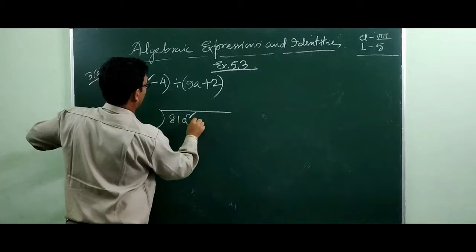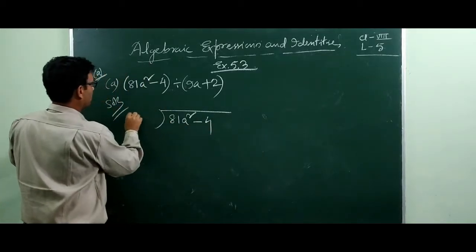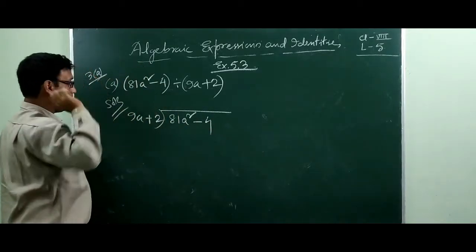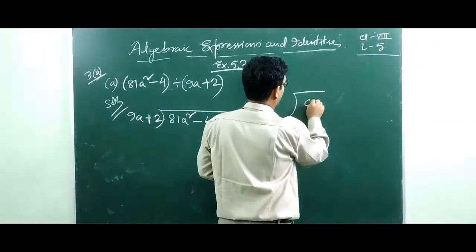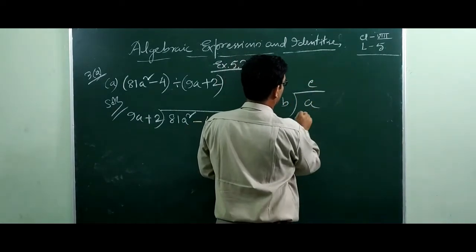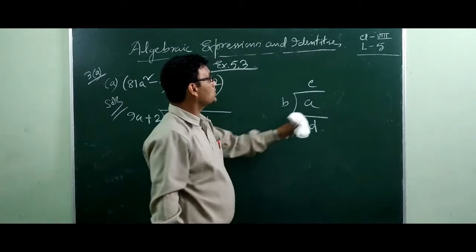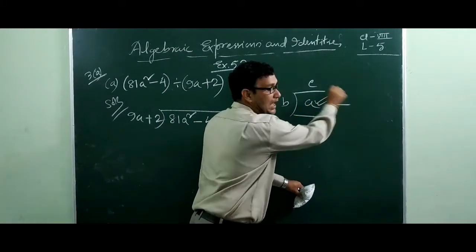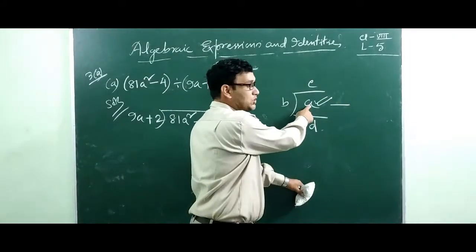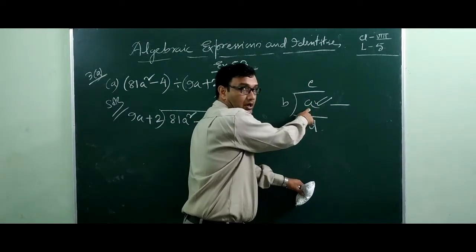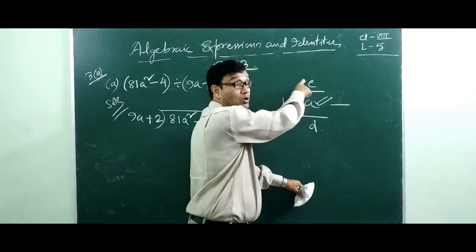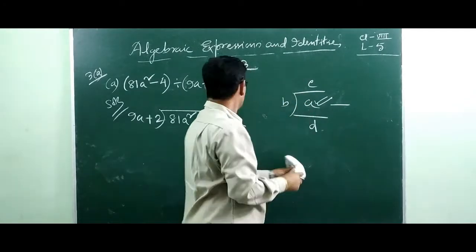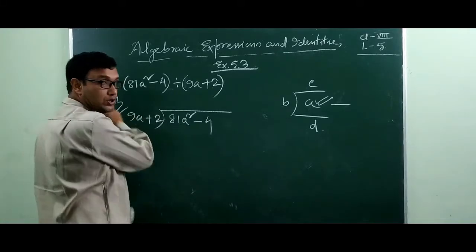Solution: 81a squared minus 4 divided by 9a plus 2. First you need to know the terminology of division. Suppose a divided by b gives quotient with remainder 3. The number being divided is called the dividend, the number by which we divide is the divisor, what you get is the quotient, and what is left is the remainder.